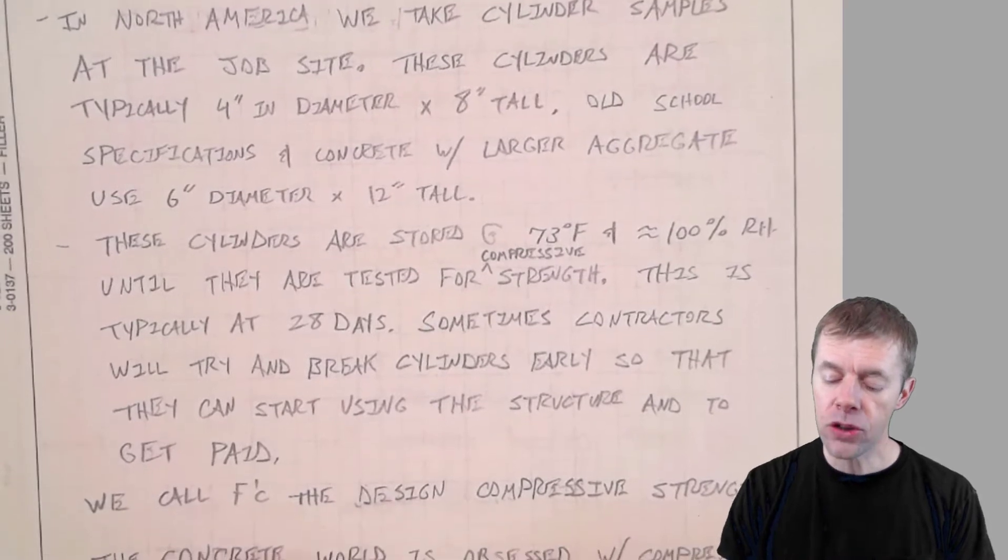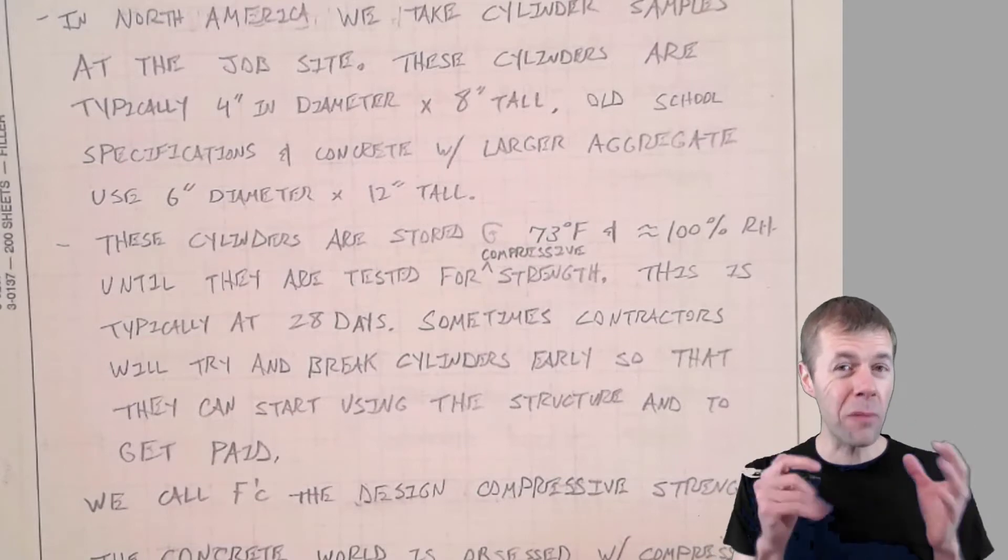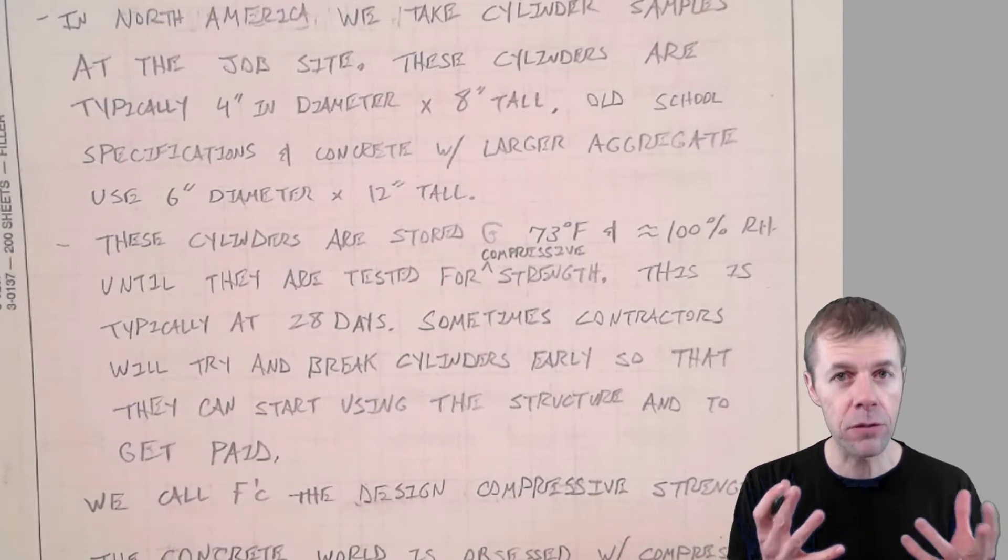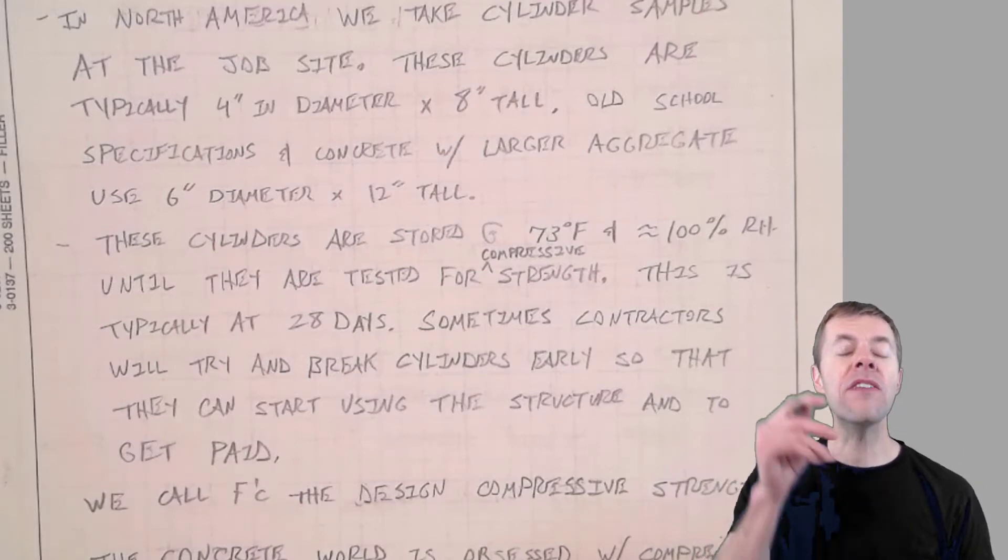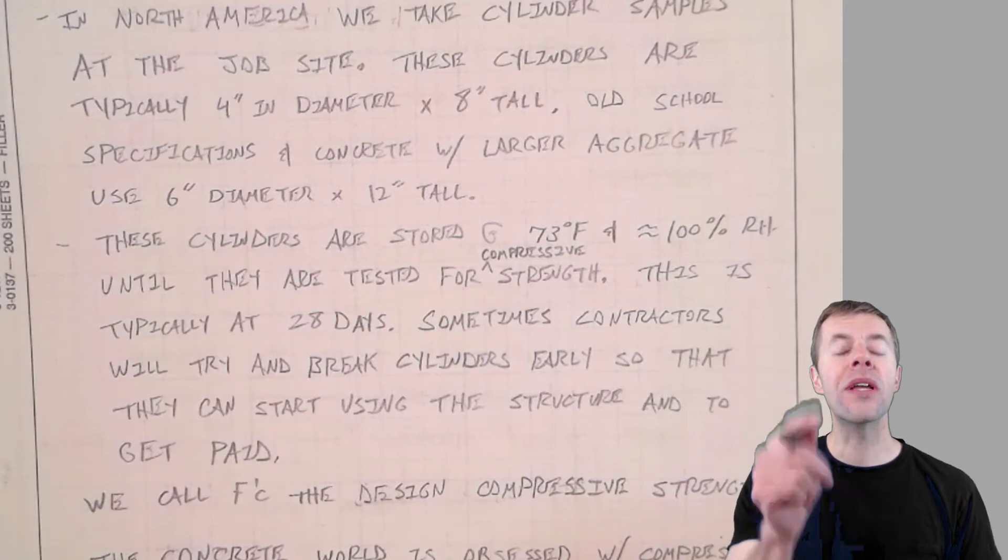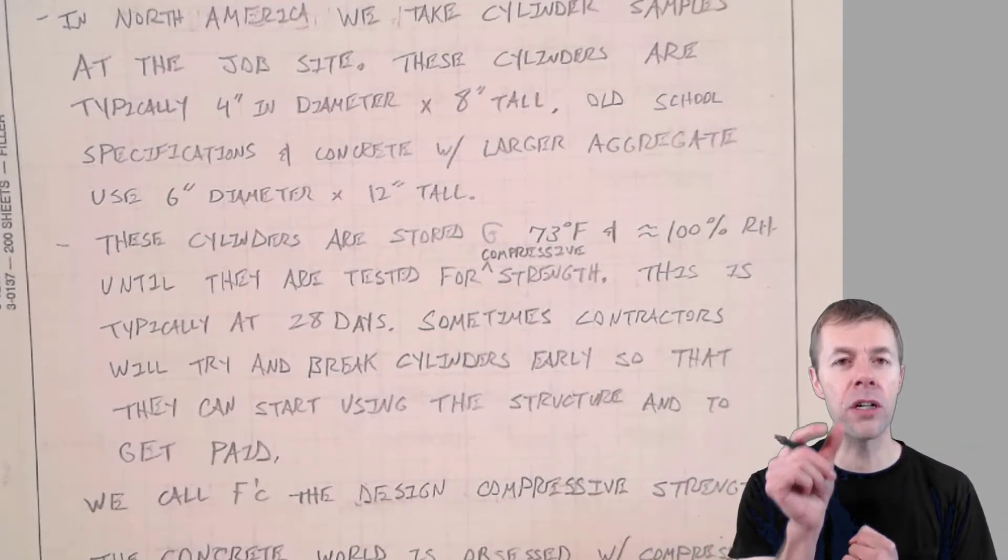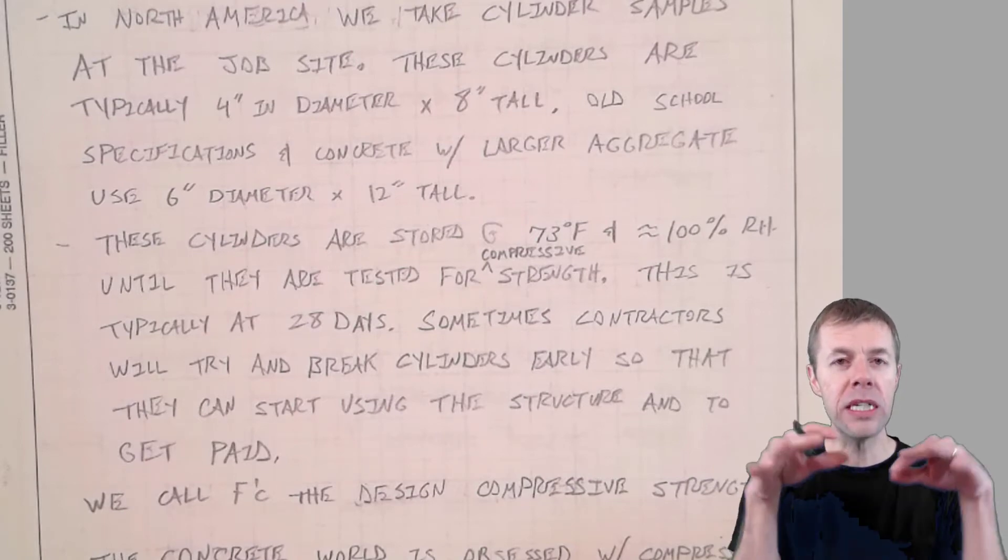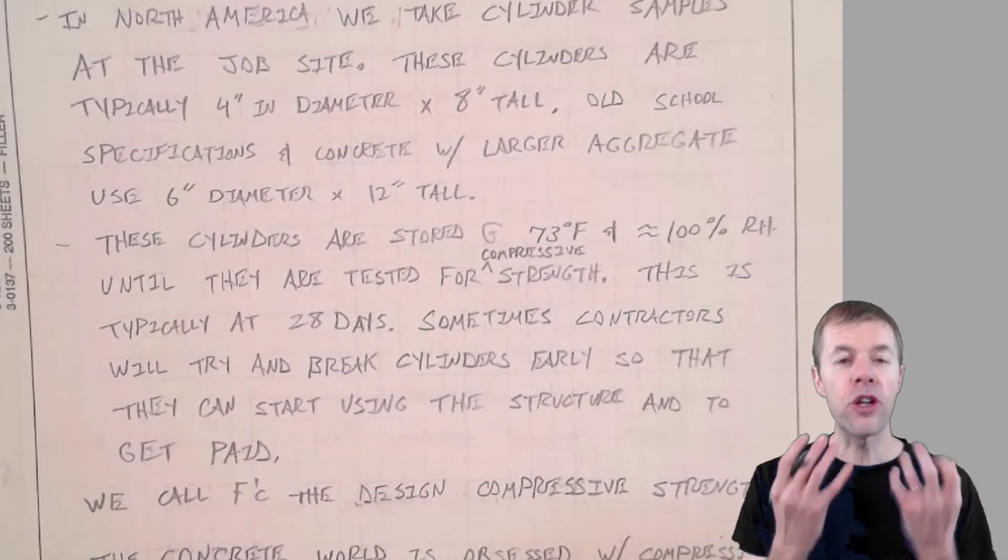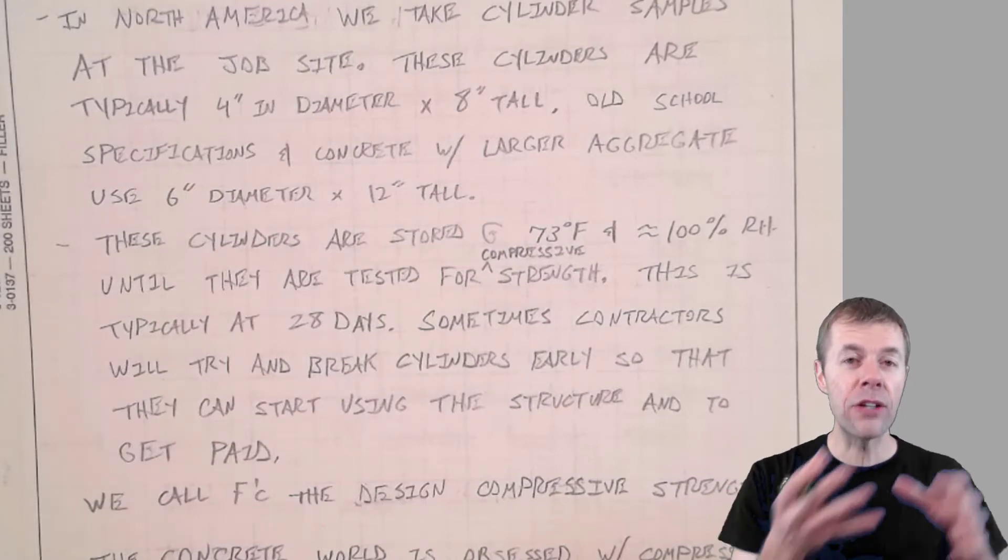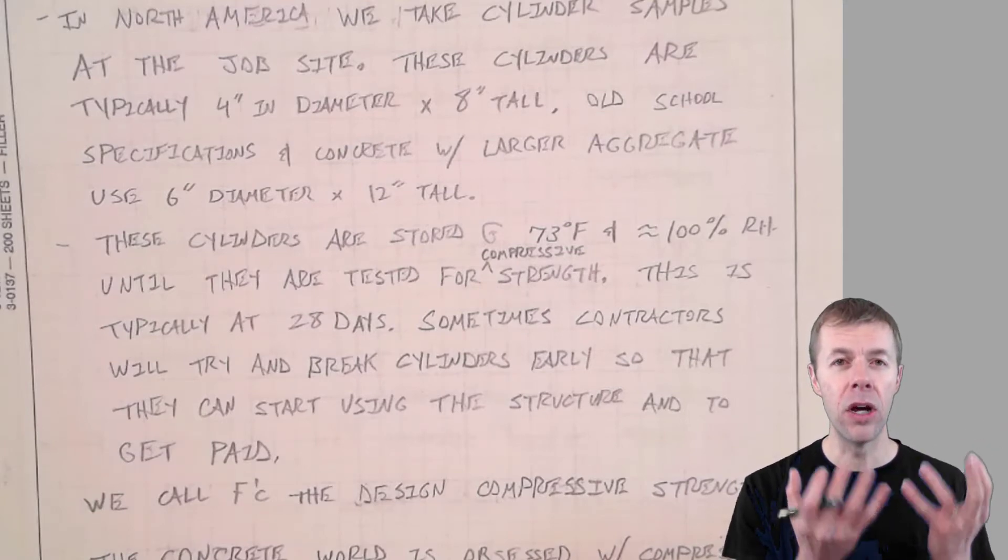Well, number one, they can start using the structure. They can start saying, I know you want some strength, like 4,000 PSI or 5,000 PSI, and you wanted it at 28 days, but I'm going to give it to you earlier. I'm going to give it to you at seven days. So you can let me start using that part of the structure to build a new part. That comes down to your schedule. And sometimes you need one part of the structure to build another part. Also, if the contractor gets strength, and they turn it in, and they prove that to the owner, then they can try to get paid early.